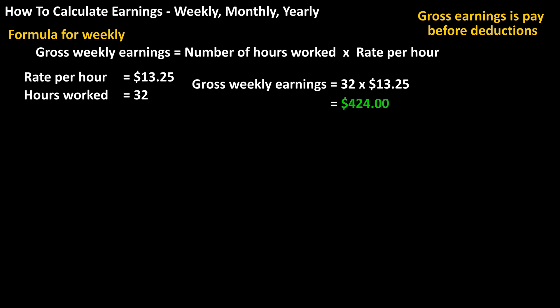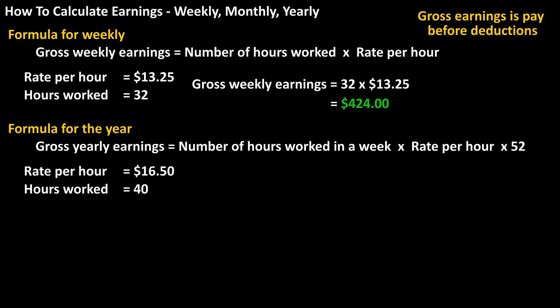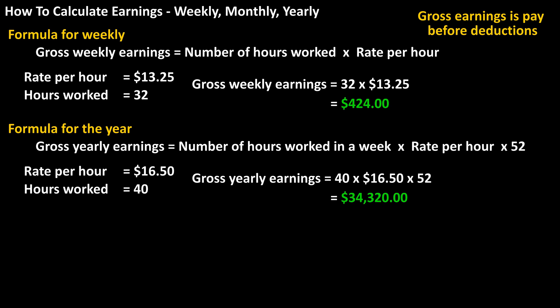To calculate gross earnings for the year, it's hours worked in a week times the rate per hour times 52 — because there are 52 weeks in a year. For example, someone working a typical 40-hour work week at $16.50 per hour: gross yearly earnings equals 40 times $16.50 times 52, which calculates to $34,320.